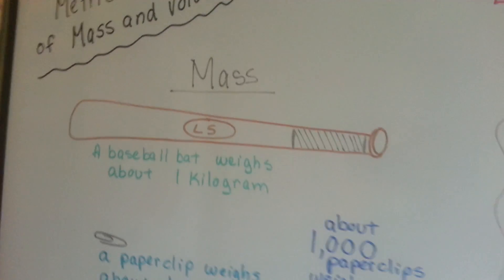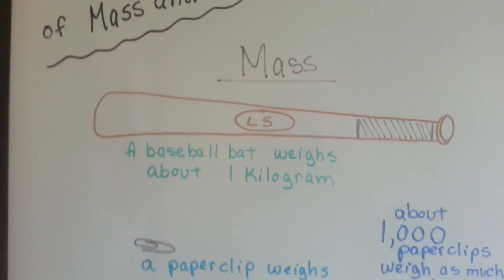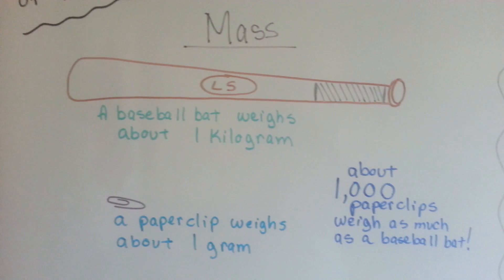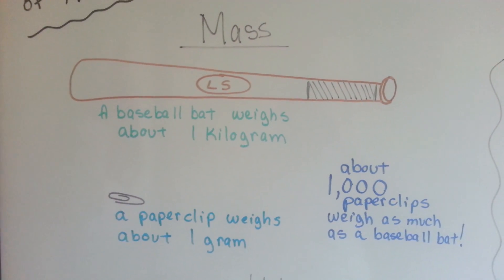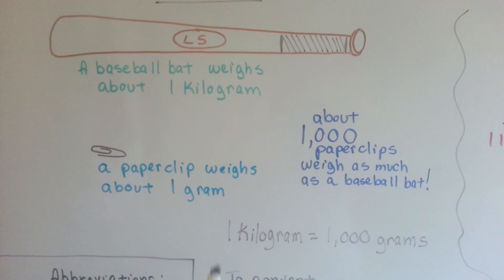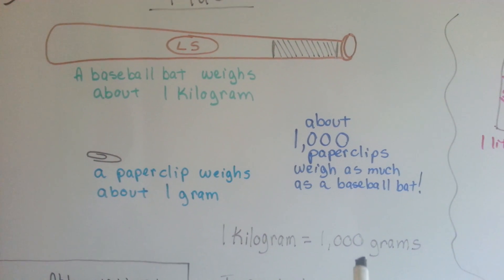A baseball bat weighs about one kilogram. A paperclip weighs about one gram. It would take about a thousand paperclips to weigh as much as one baseball bat. A kilogram is equal to a thousand grams.